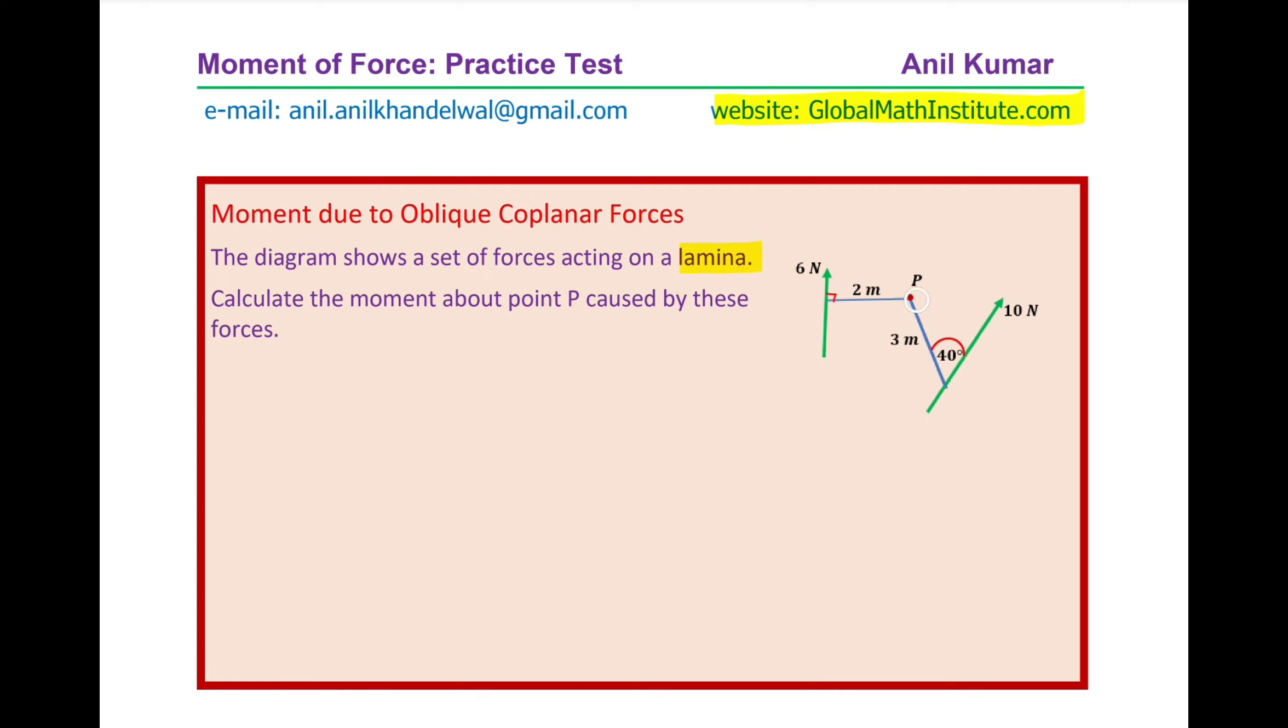The forces are shown in the diagram. One force of 6 Newton is acting at point P whose shortest distance is 2 meters. The other force is of 10 Newtons which is acting along the line shown here in blue, that distance is 3 meters but it makes an angle of 40 degrees with the force. You need to find the moment due to both forces at point P.